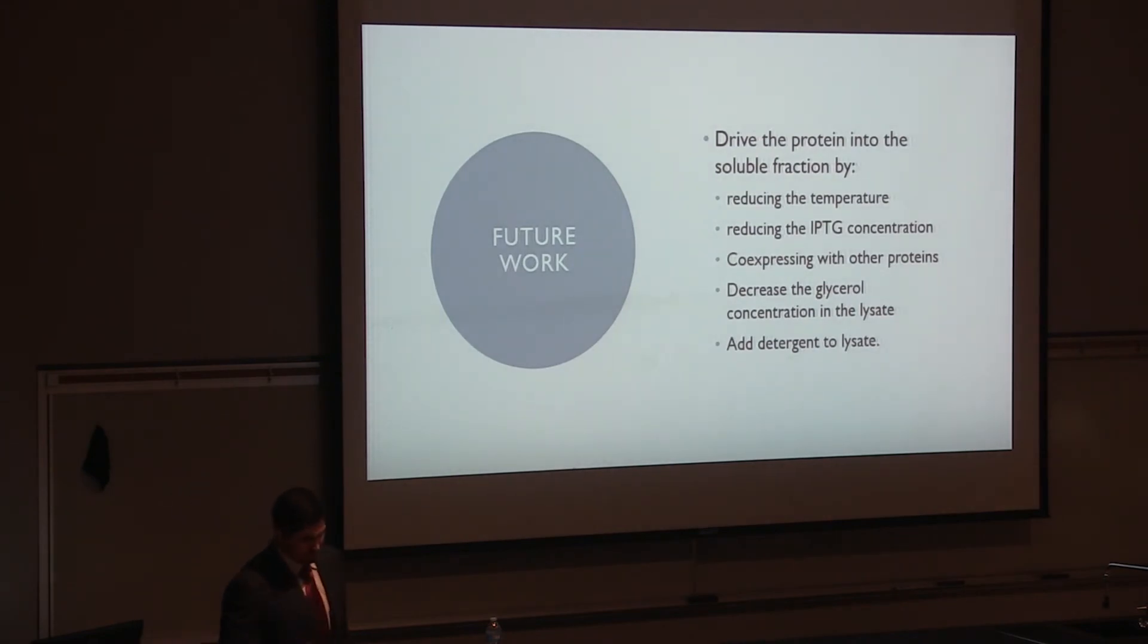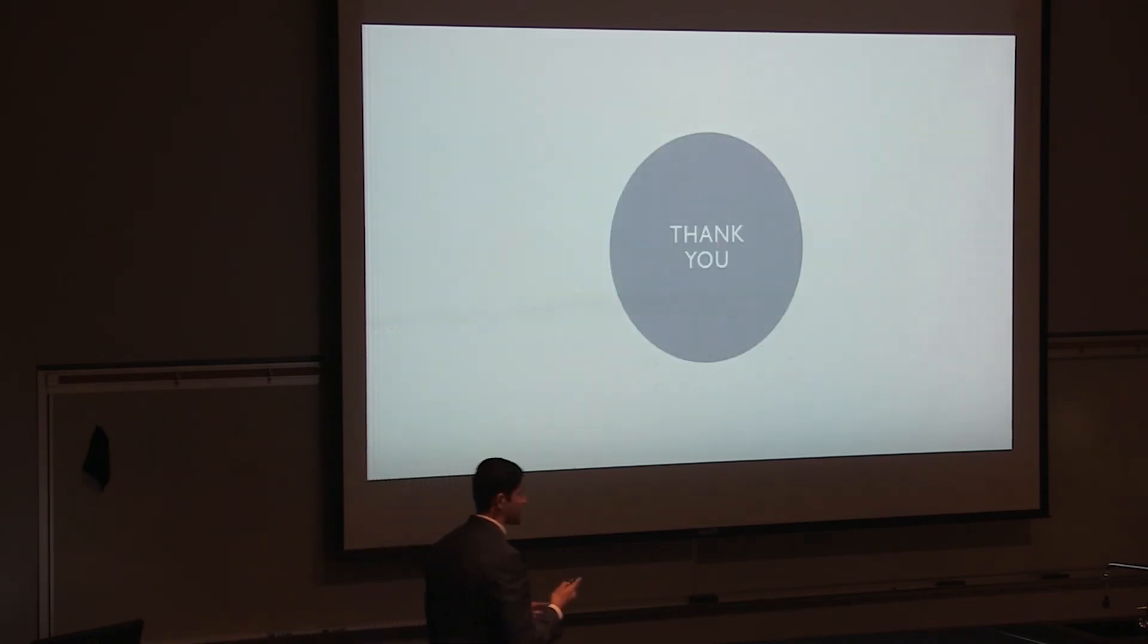Regarding moving the protein from the insoluble fraction to the soluble fraction, we're still working on it. A couple of methods employed was trying to reduce the cell growth temperature or lower the IPTG concentration. Also, try to co-express the protein using other proteins such as chaperones, which can aid the protein folding or unfolding. Also, we can try to decrease the glycerol concentration of lysate or add a detergent to the lysate. And that's about it. Thank you.